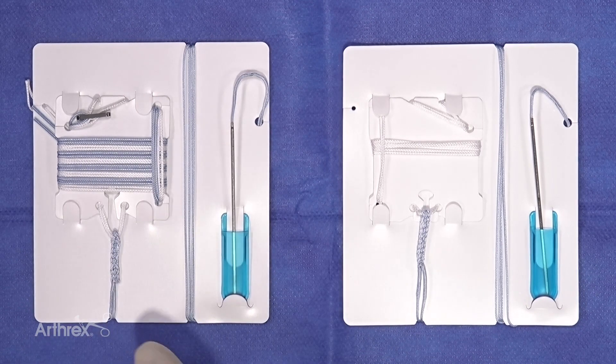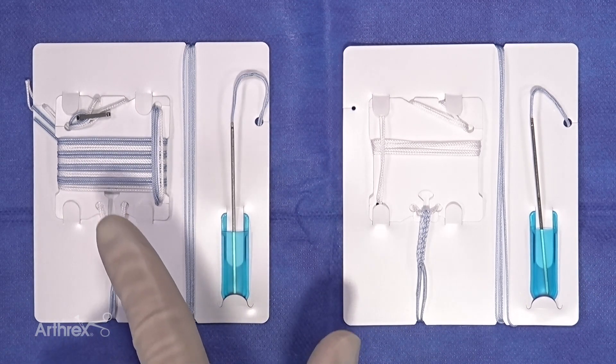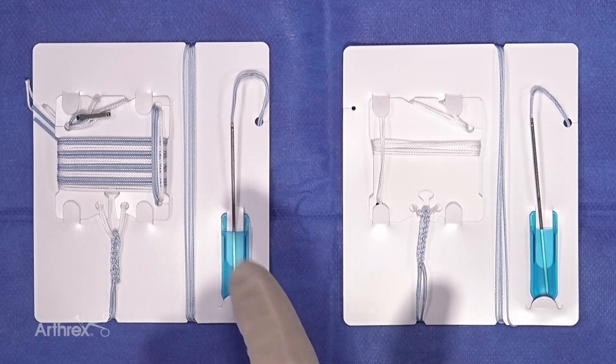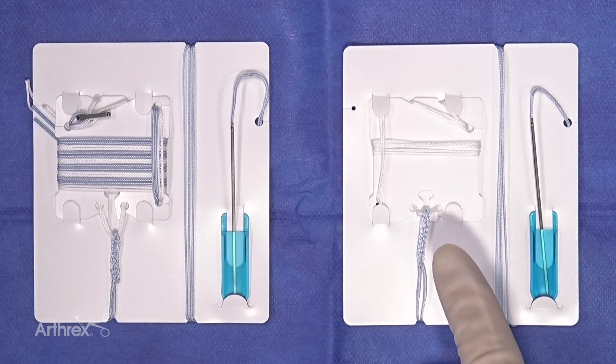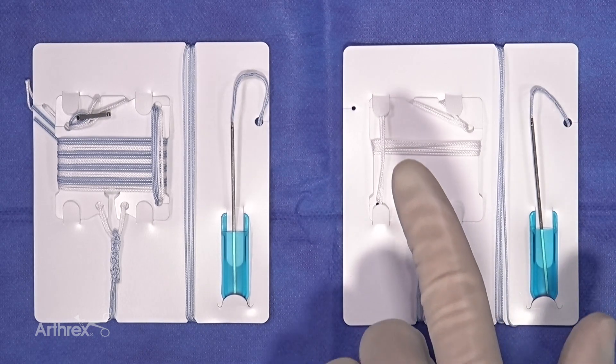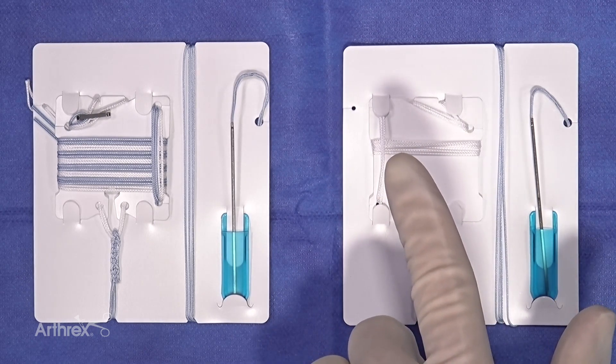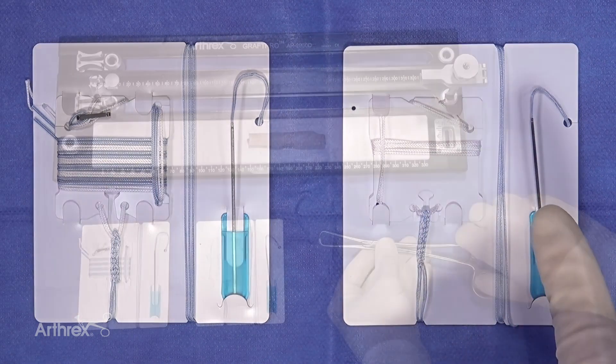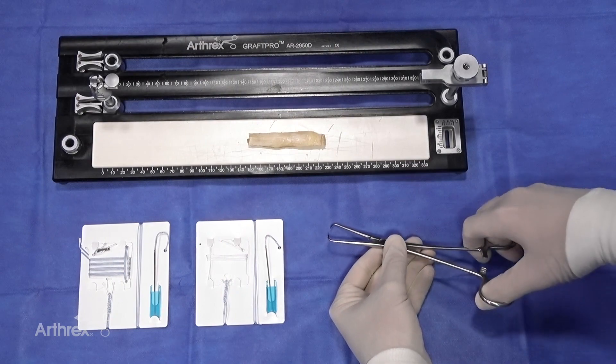We have a nice stout needle which could pierce the graft very easily. Over on this side we have the fiber tag ABS, and this is all attached together again, making it very easy to use and eliminating steps. Here we have the graft clamp, this is specially designed to hold the graft and also the fiber tag system.